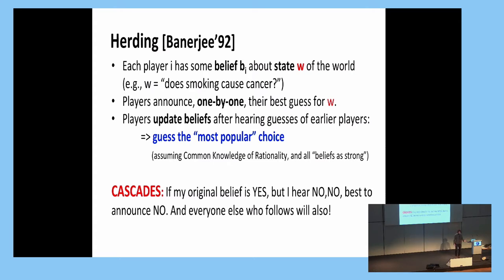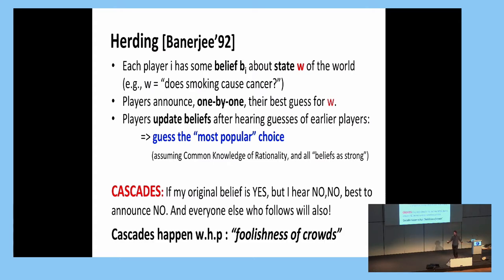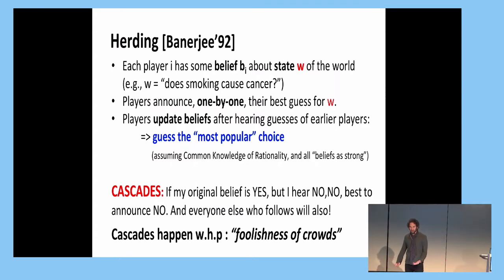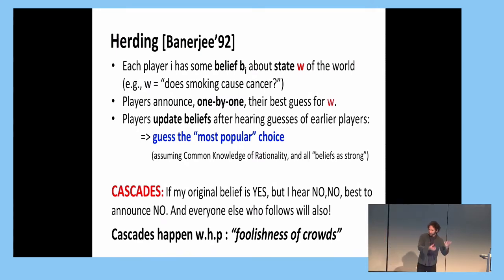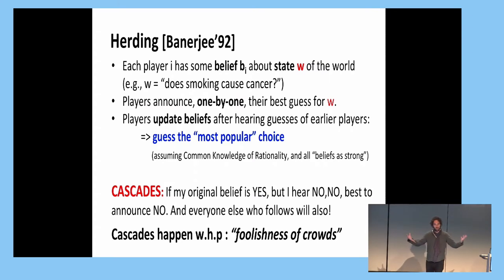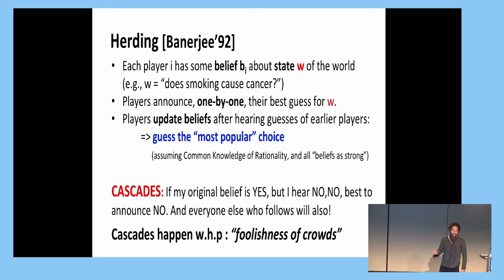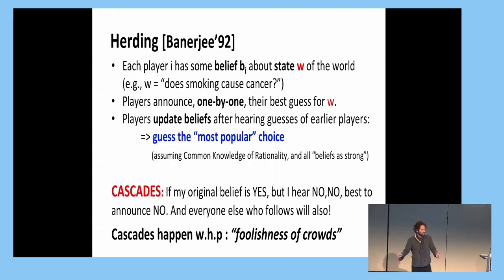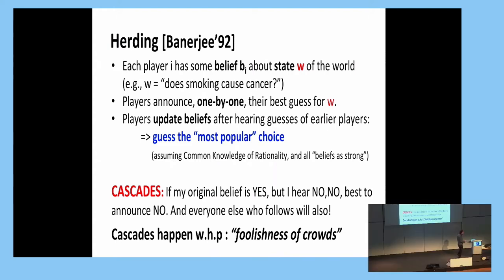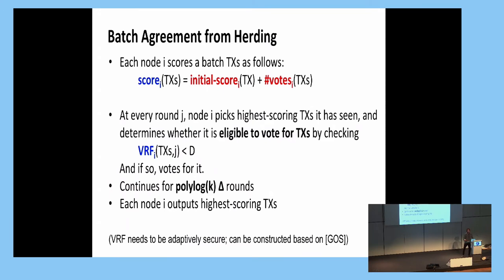This is sometimes called the foolishness of crowds because it can lead to crazy decisions — even though everybody starts with good beliefs, a few individuals saying the wrong thing causes it to propagate. This is one way to explain the spread of fake news. But note that they all agree — they may not agree on the truth, but they always agree — and this happens with probability almost one. We are going to use a very similar approach to get consensus and batch agreement.